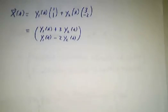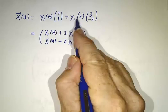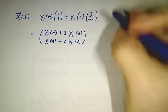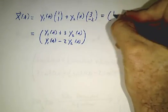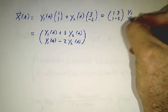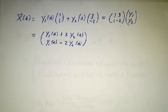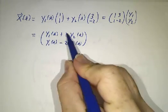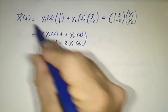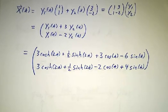And once we have y1 and y2, we can put them back together to figure out x. x at any given time is y1 times the first eigenvector plus y2 times the second eigenvector. Or if you prefer, you could write this as P times (y1, y2). However you slice it, if you know y1 and y2, you know x. And we do know y1 and y2, so there's x.